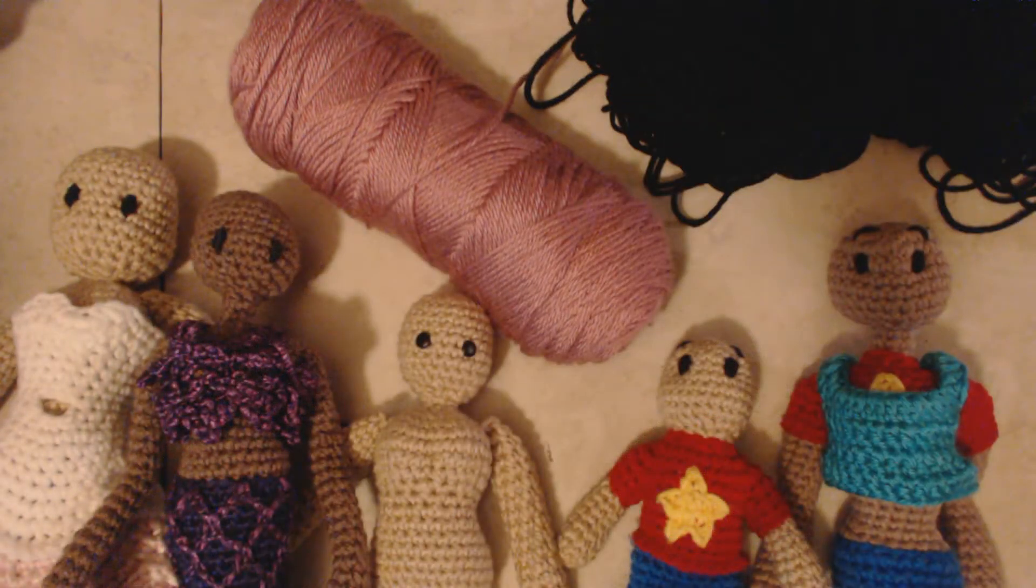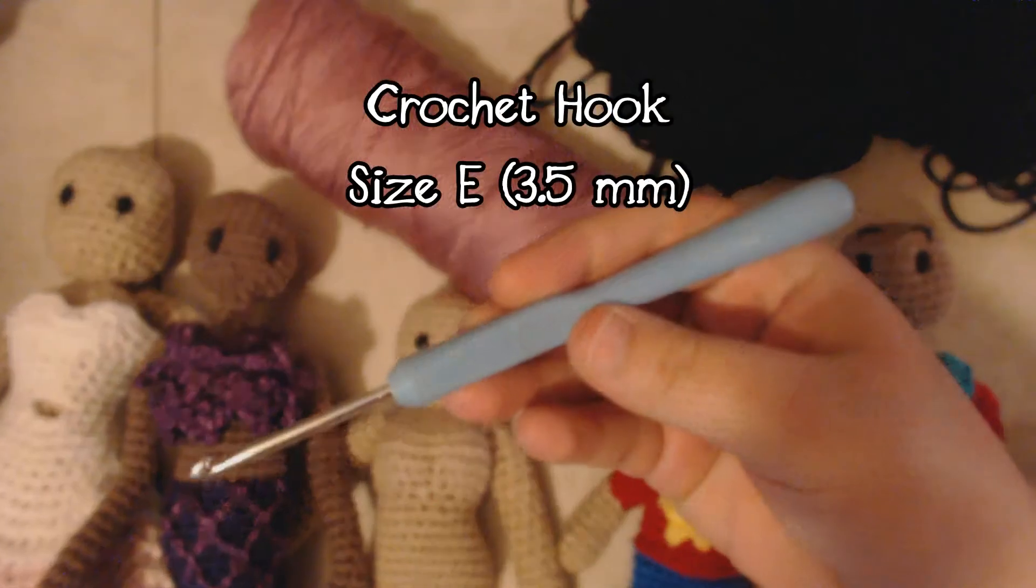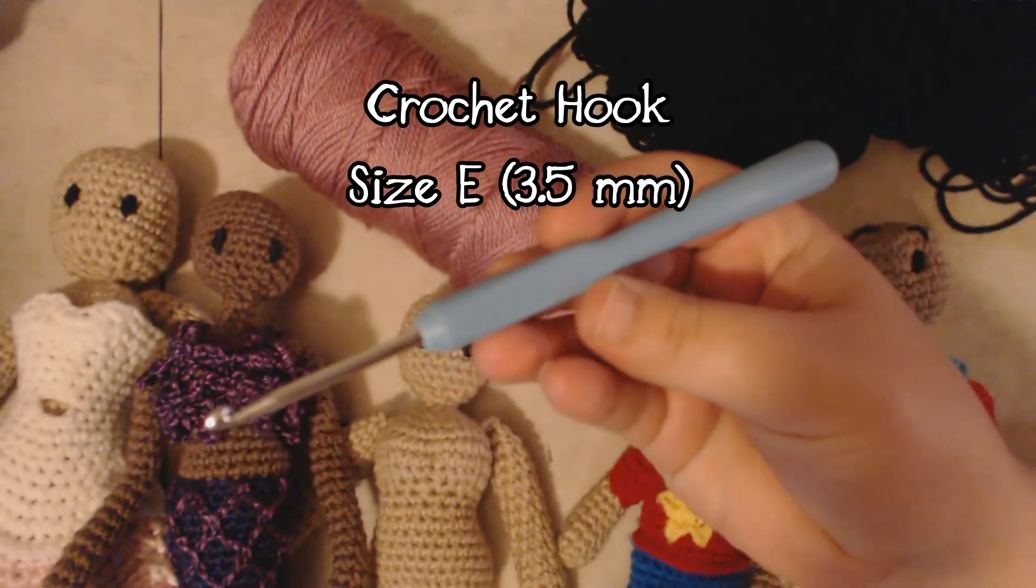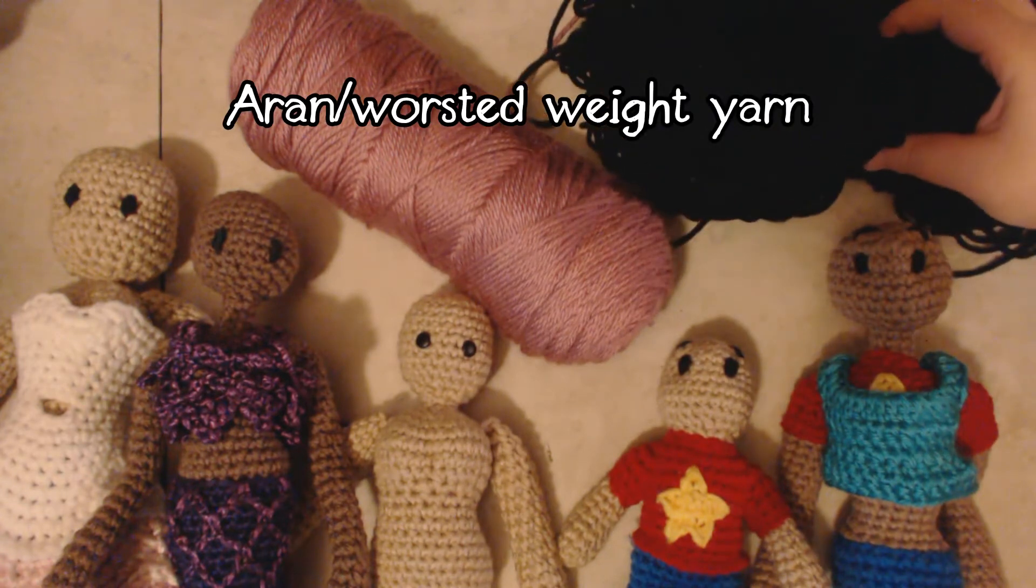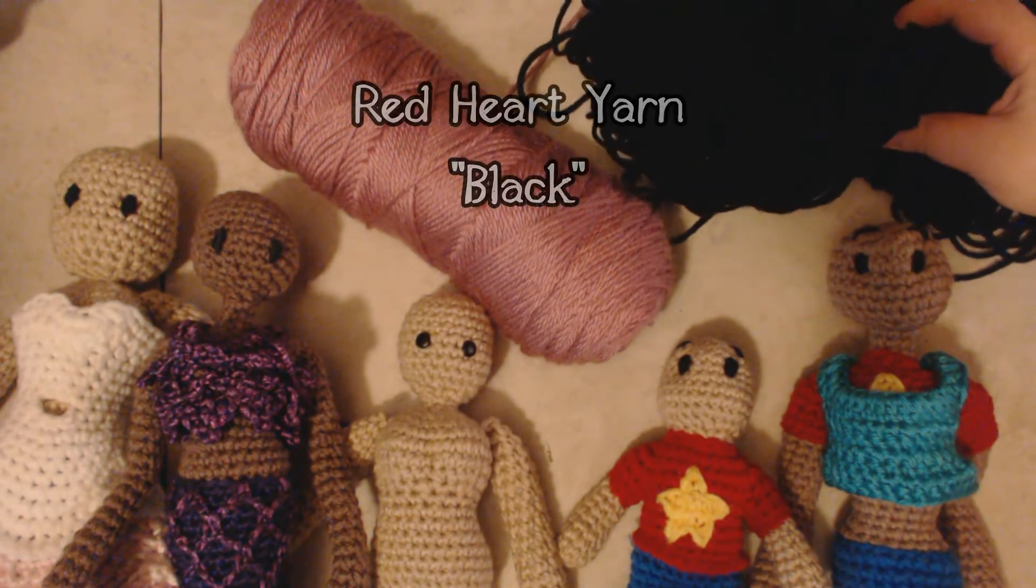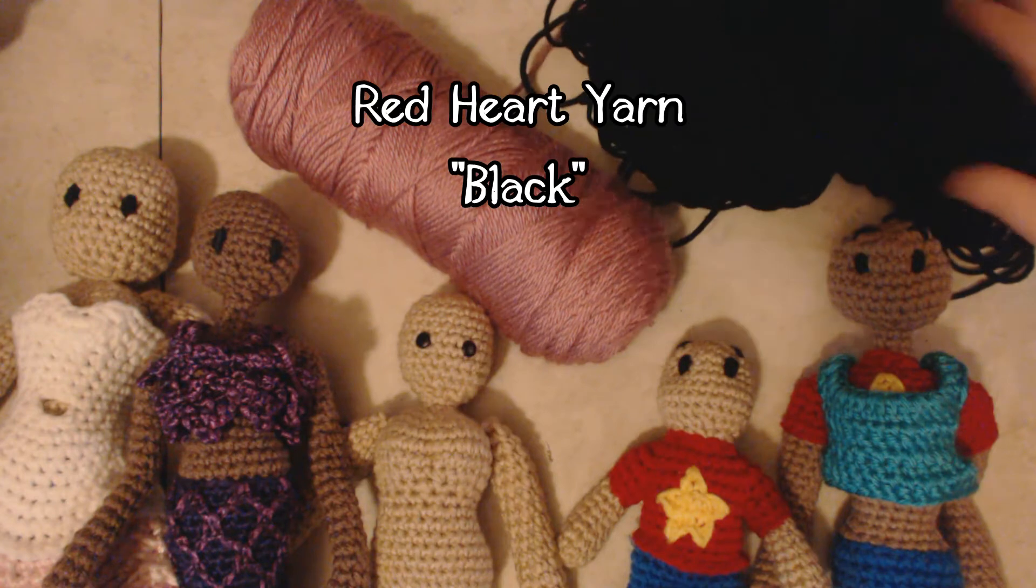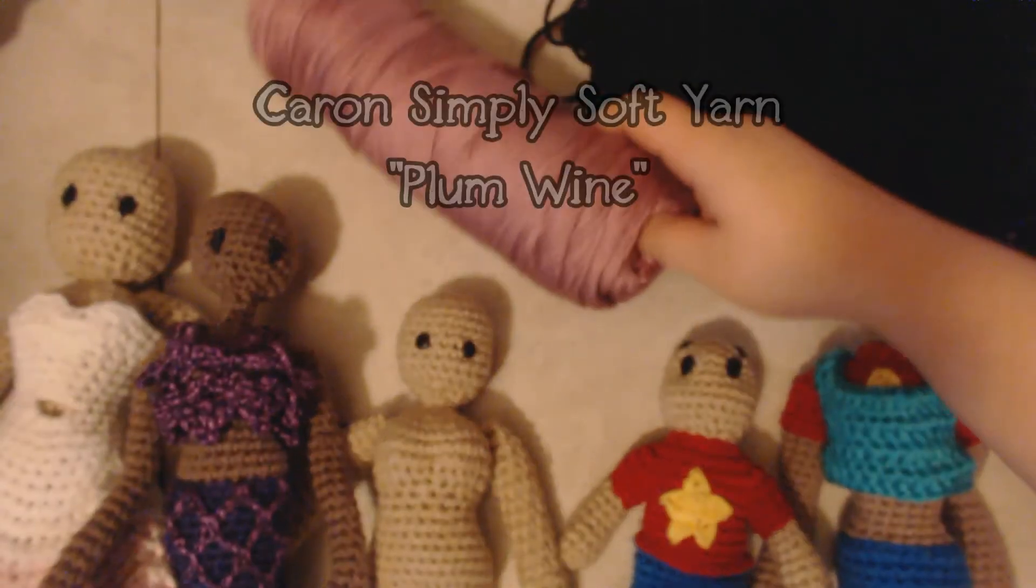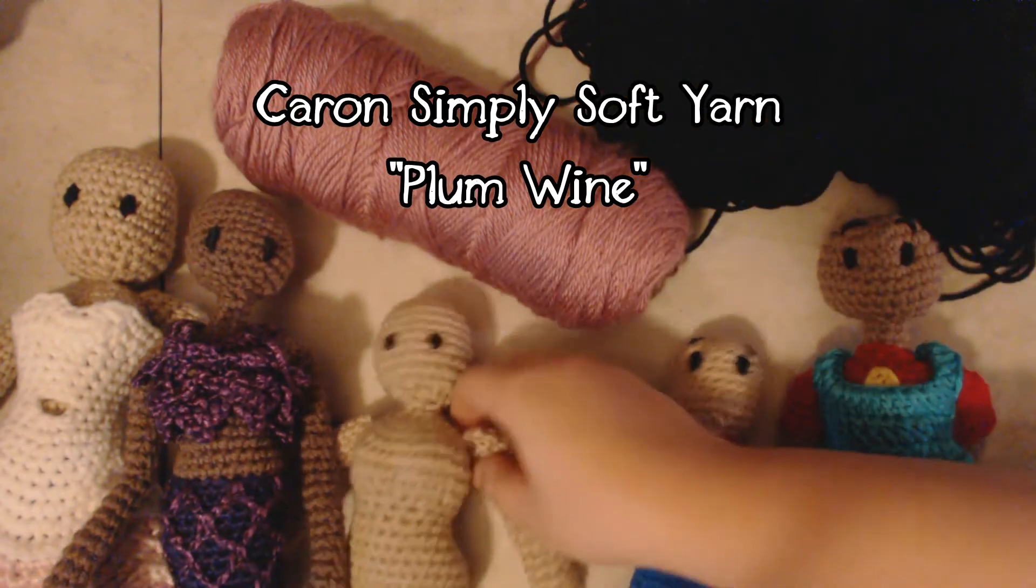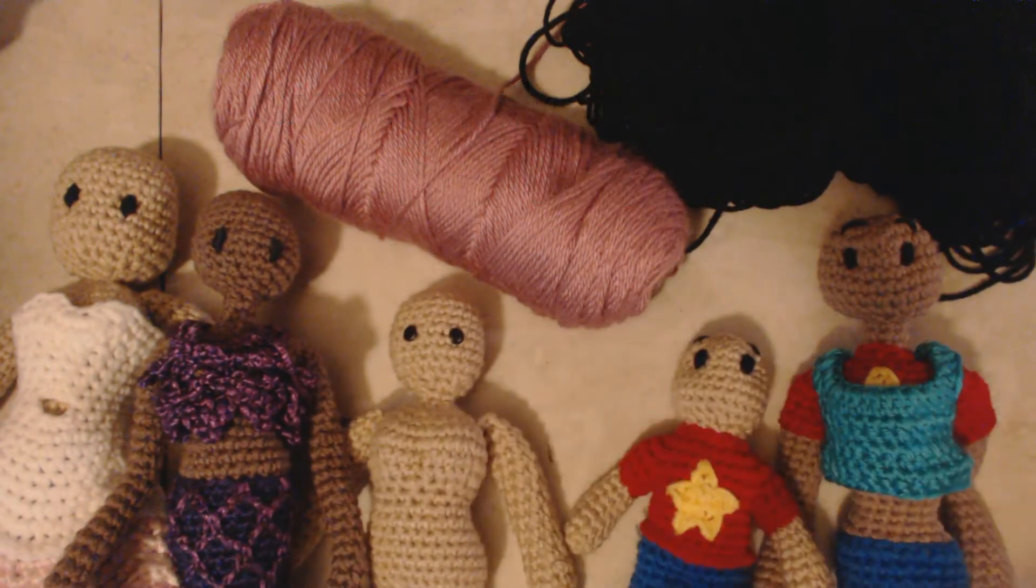Some things you'll need for this tutorial are a crochet hook, I'll be using a size E, some Aran or worsted weight yarn in the same or similar color to the doll's hair. I'll be using Black Aran weight yarn from Red Heart for these dolls and Plum Wine worsted weight yarn from Karen Simply Soft for these dolls. Just make sure to get as close as possible to the color of the hair you'll be using.